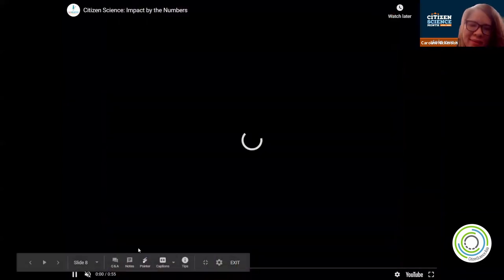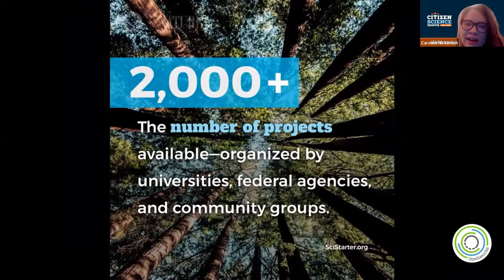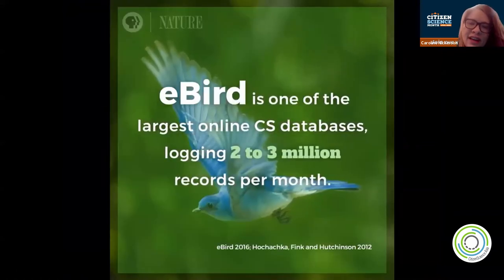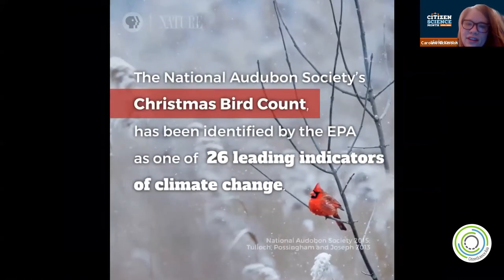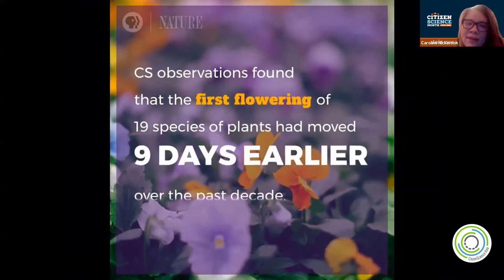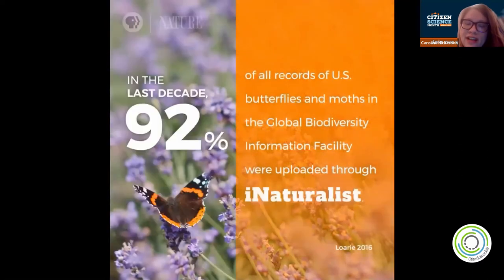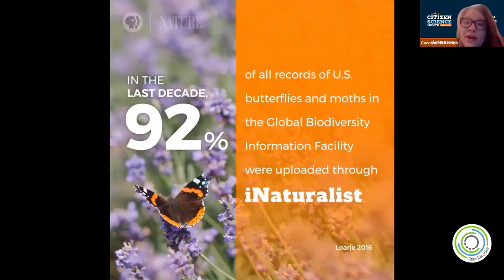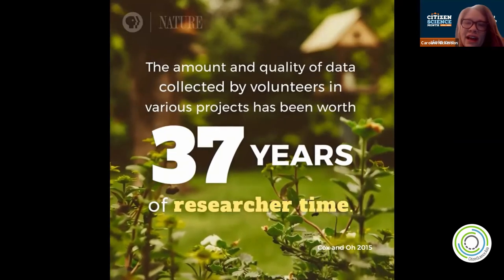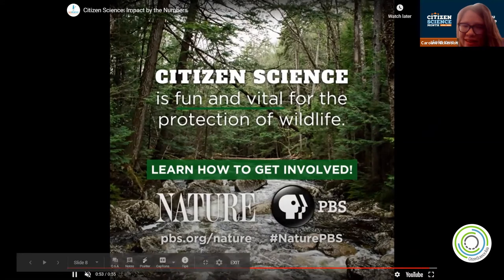I like to share these numbers because I think they're really compelling. On SciStarter, where I work, there are over 2,000 projects listed. eBird is listed on SciStarter too — bird count data has been classified as a leading indicator of climate change. We know flowers are appearing earlier and seasons are changing because of citizen science data. On iNaturalist, over 92% of butterfly and moth records in GBIF are from iNaturalist. Citizen scientists also speed up researcher time, allowing the scientific community to do research faster.